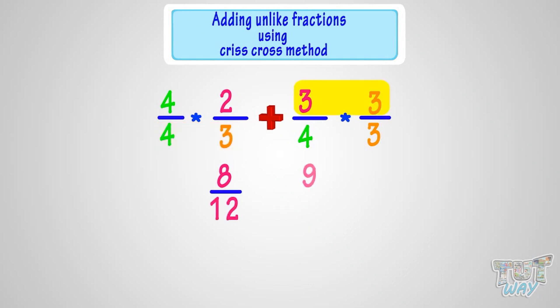3 multiplied with 3, we get 9. 4 multiplied with 3, we get 12. So we got 8 by 12 and 9 by 12.